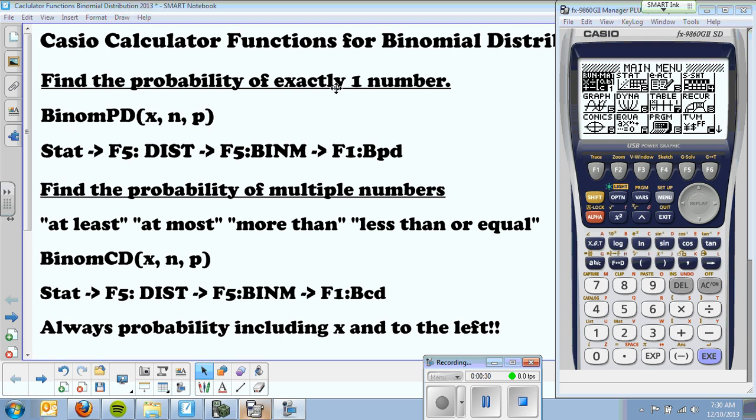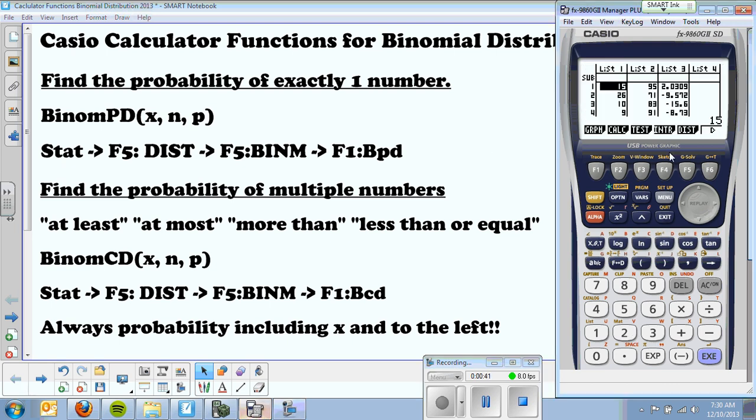To find the probability of exactly one number, that's binomial PD, and you type them in the order X, N, P. To get there, you make sure that you're in stat world. You're going to hit F5 distributions, F5 again for binomial, and then here's your PD for exactly one number, and your CD for multiple numbers.